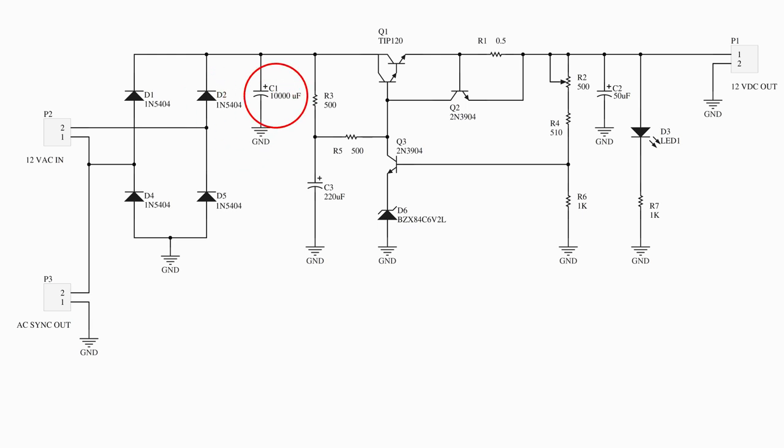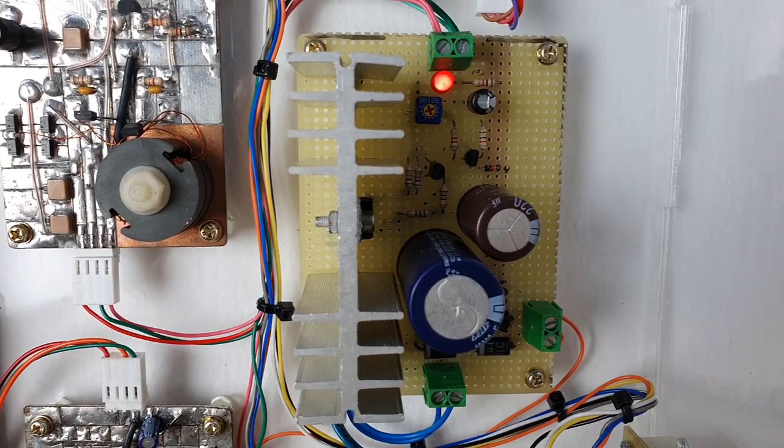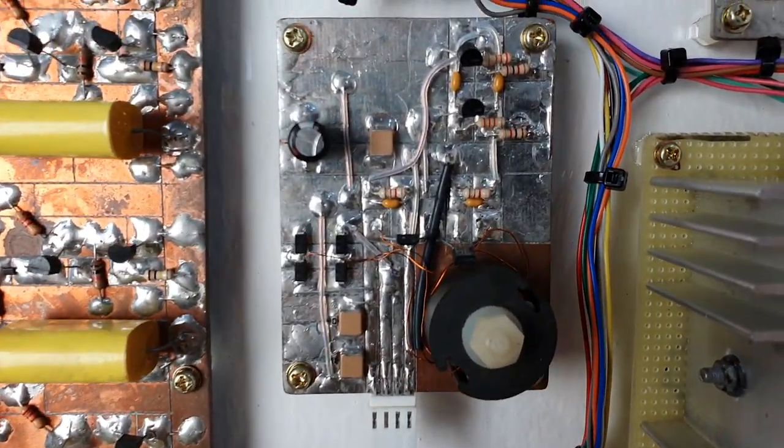The bridge rectifier and filter capacitor create a DC bus of around 17 volts which is regulated by the Darlington transistor Q1. Q2 and R1 provide short circuit protection to the power supply. The output voltage is sampled by R2, R4, and R6. This is fed back to Q3 which basically compares it to the Zener diode voltage to regulate the final output.